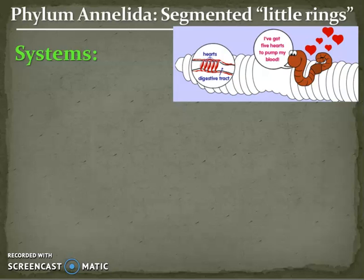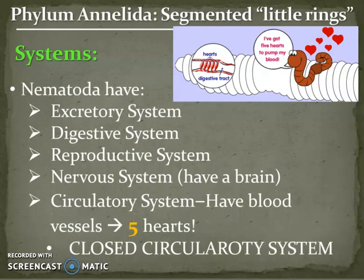The systems that our worm has include excretory systems, digestive systems, a reproductive system, and a nervous system - those brain-like ganglion structures. A circulatory system - we labeled those aortic arches, and there are five of them that work together like a heart. They have a closed circulatory system. This is the first time where we have blood pumping through tubes throughout the animal's body through an artery, a vein, or just a tube that carries blood through the body.